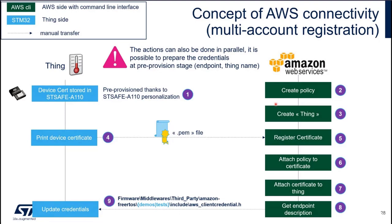Now that you have created a thing, if you turn on your STM32, it will communicate with the STSAFE embedded on the IoT kit, and it will print the device certificate in a terminal console. You will copy-paste this device certificate into a .pem file and register this certificate on Amazon's site. This is the drawback — you need to do this for each and every device. But the benefit is that you will be able to move from one account to the other. Then you attach a policy — the one you created initially — to the certificate, and attach the certificate to the thing.